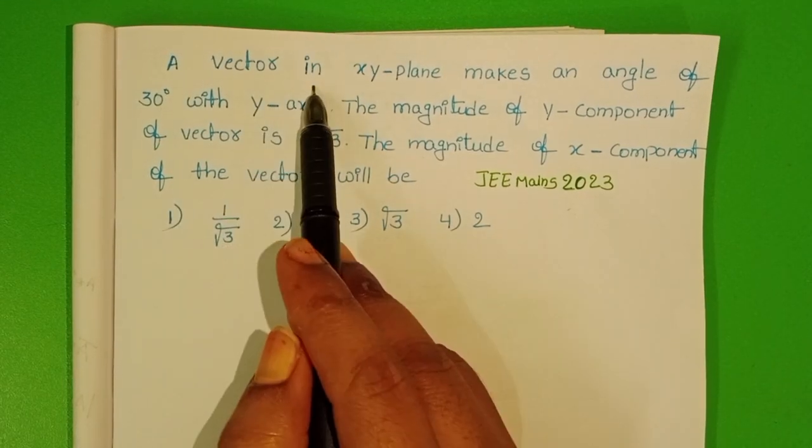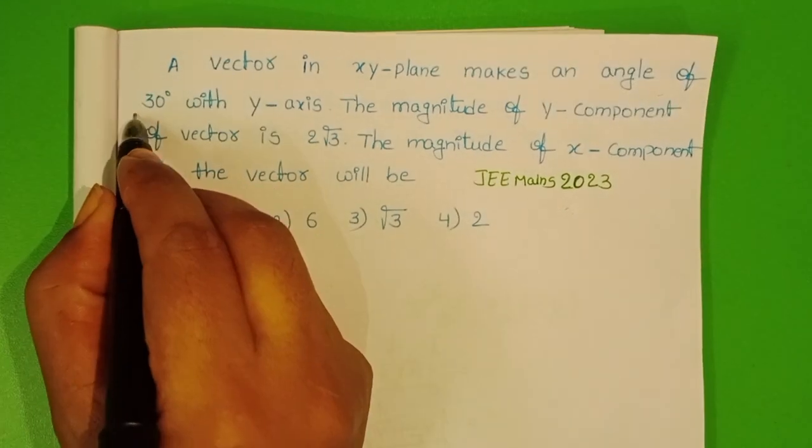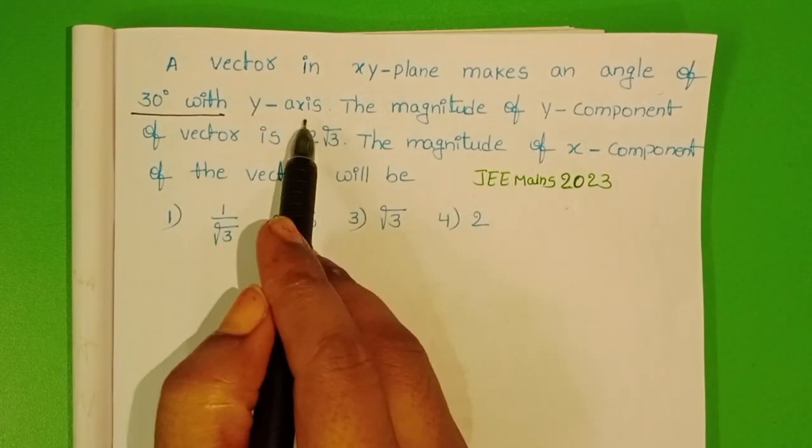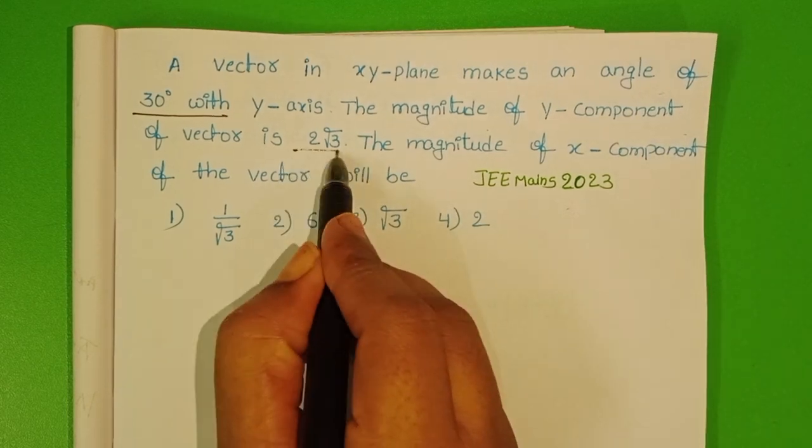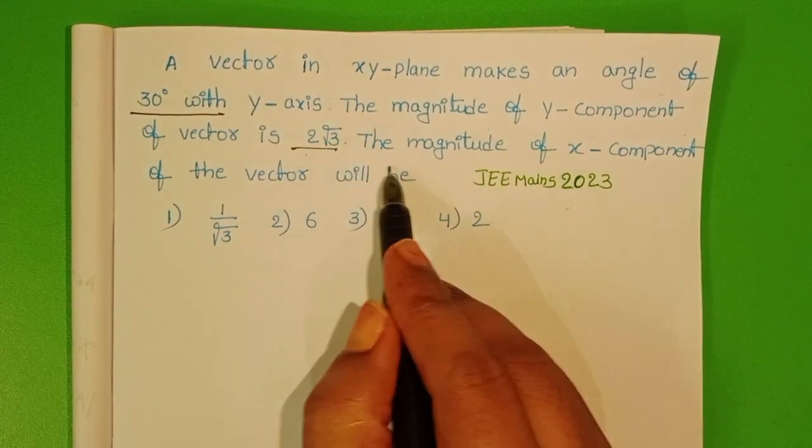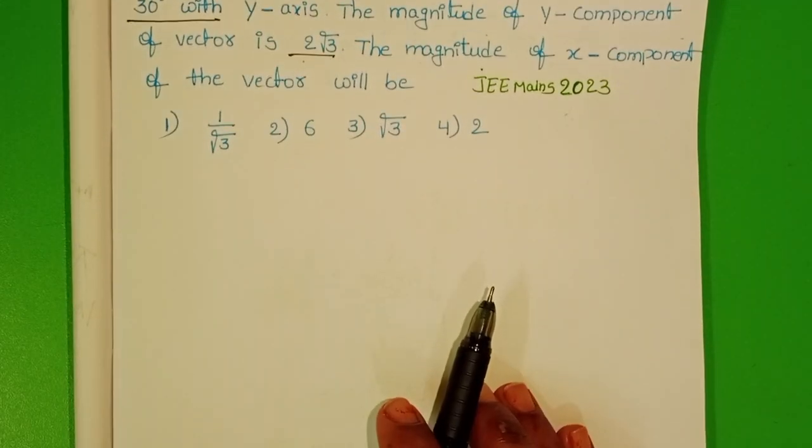A vector in XY plane makes an angle of 30 degrees with the Y-axis. The magnitude of Y component of vector is 2√3. The magnitude of X component of the vector will be.